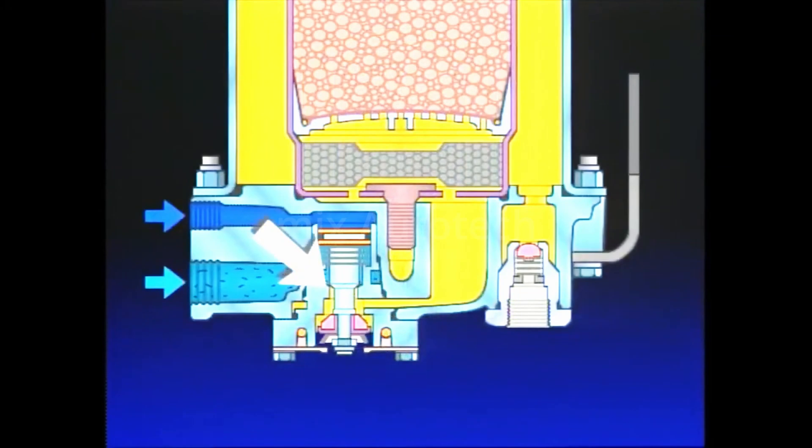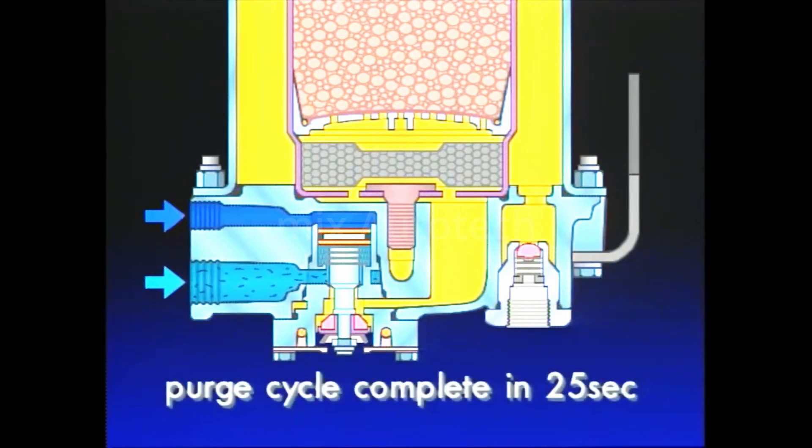Closing the dryer inlet port during the purge cycle ensures that loss of engine turbocharger pressure is minimized in the event the compressor intake is connected to the turbo. The entire purge cycle is complete in about 25 seconds.